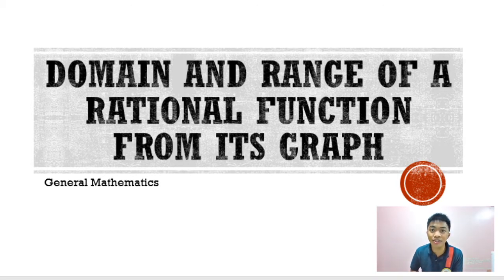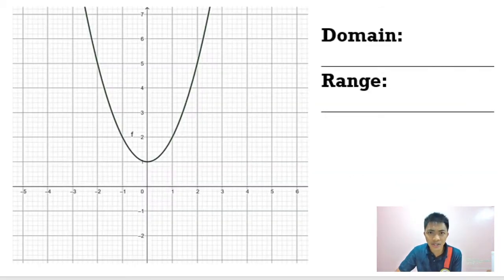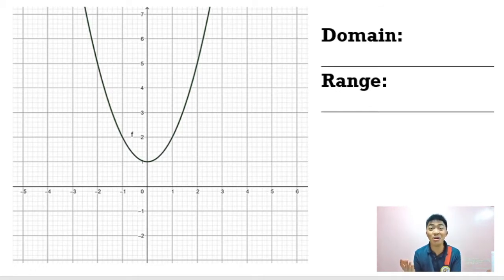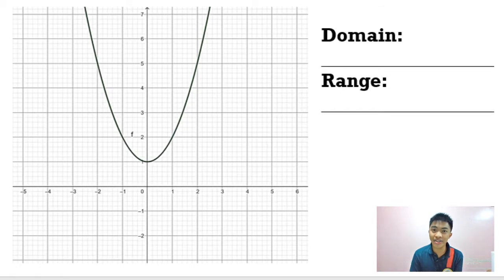Take note that domain is the set of all the x values, and range is the set of all the y values. So actually, if we are given a set of ordered pairs, it is easy for us to determine the domain and range. For the domain, we just enumerate the x coordinates, and for the range, we enumerate the y values. But what if we are given a graph?